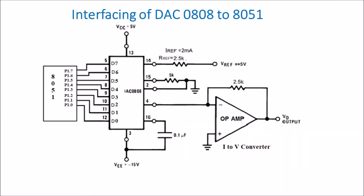Now, interfacing of DAC 0808 with 8051. The 0808 IC is an 8-bit DAC IC, so it has 8 digital terminals D0 to D7, and these terminals are connected to port 1. So port 1 provides the digital input to the DAC IC. We can use any other port also — port 0, port 2, or port 3 — but in this interfacing diagram, port 1 is connected.